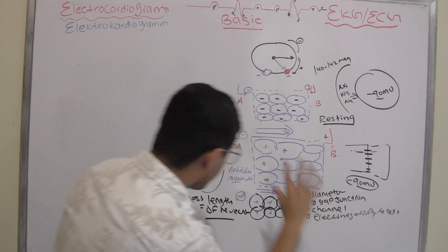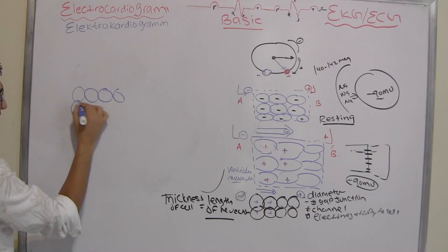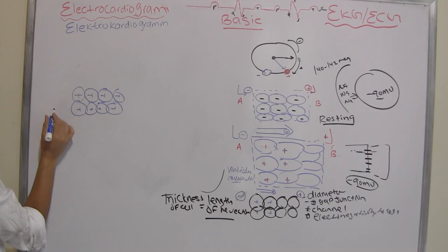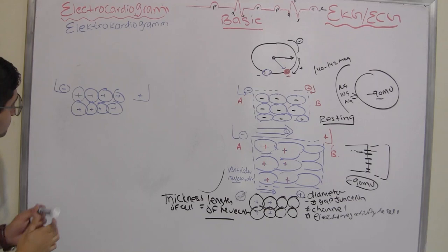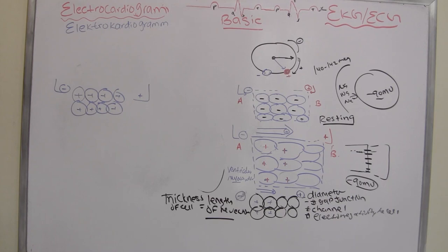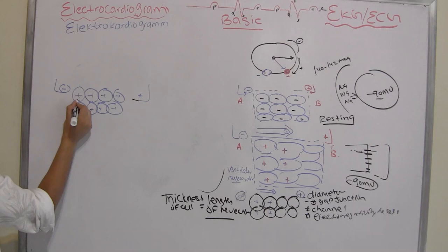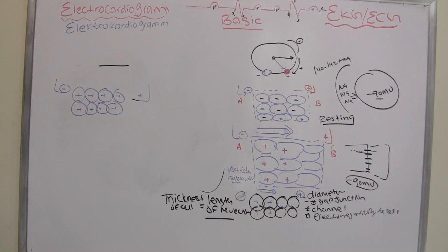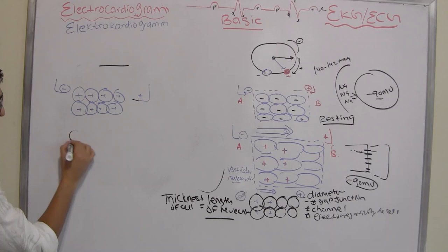Now let's draw the heart again and place electrodes. I'm drawing a person with the heart inside. The SA node is here, then we have atrial cells, and I'm placing electrodes on the body surface — a positive end and a negative end — to detect the electrical activity happening in the heart. When the atria start depolarizing, the wave of charges moves and generates a magnetic force, which we represent as a vector. Because atria are thin with fewer gap junctions, they produce a smaller vector.